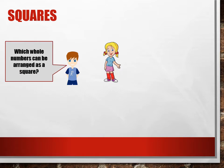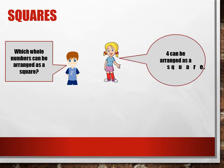Which whole number can be arranged as a square? The number 4 can be arranged as a square.